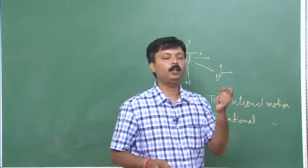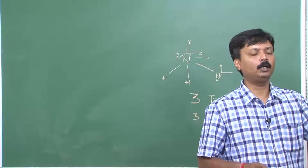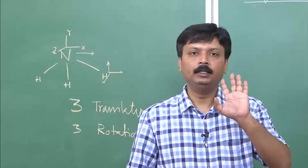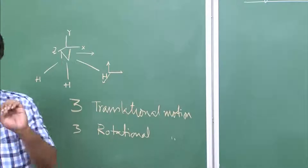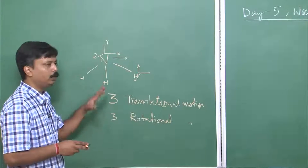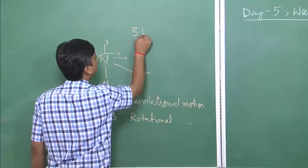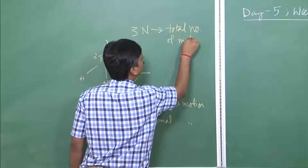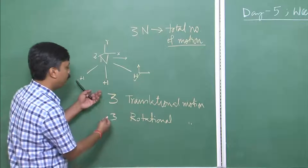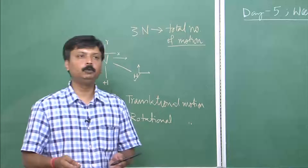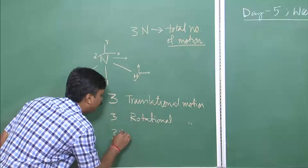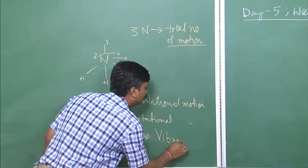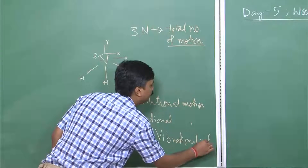Each atom can execute motion in x, y, or z independently. If I have n atoms, the total number of directional motions — total degrees of freedom — is 3n. With three translational and three rotational degrees of freedom subtracted, the remaining degrees of freedom for vibrational motion are 3n minus 6. That is how we get the formula 3n − 6.